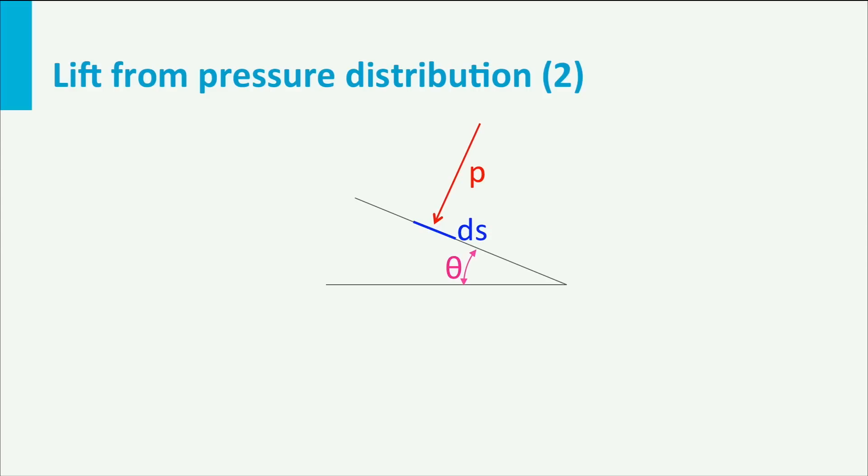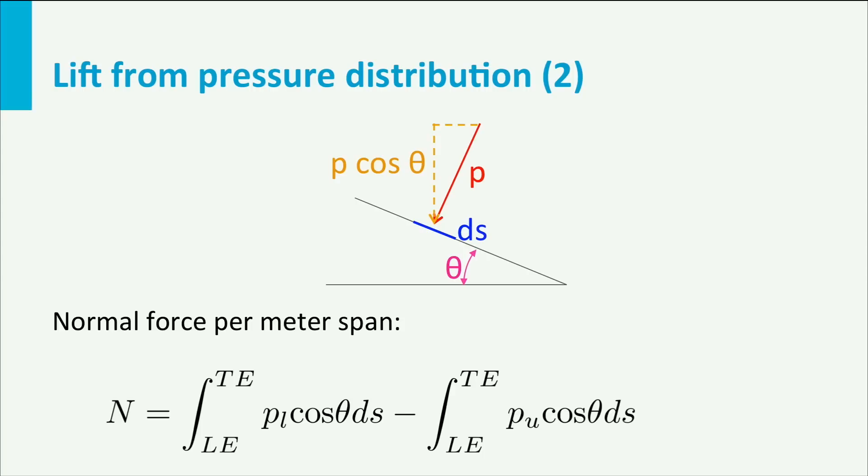This force is perpendicular to the surface. If we want to know it in y direction, we have to decompose it in that direction. This is p ds times cosine theta. So the normal force on the wing per meter span is the integral from the leading edge to the trailing edge of the force on the lower surface, p lower times ds times cosine theta, minus the integral over the contour of the force due to the pressure on the suction side.